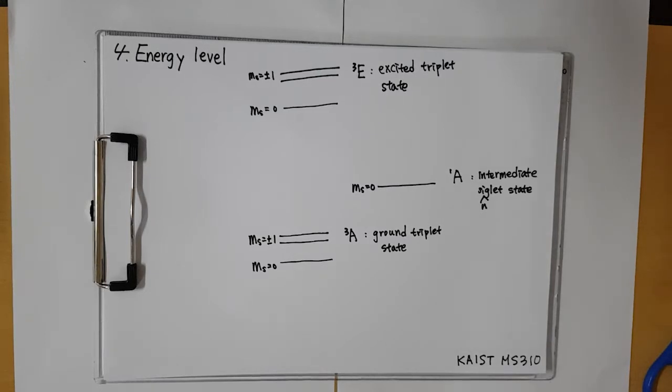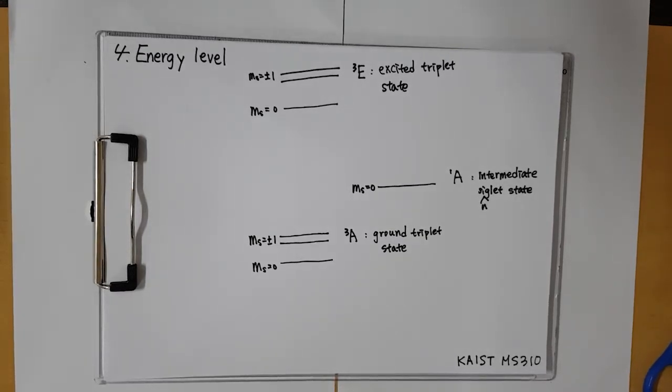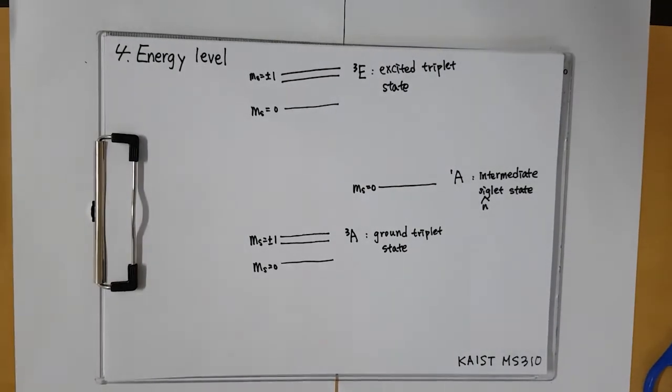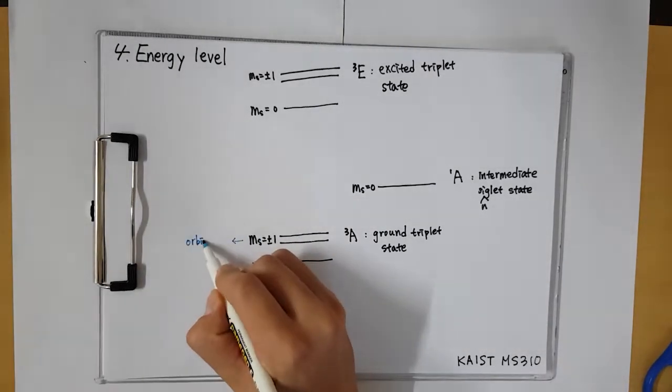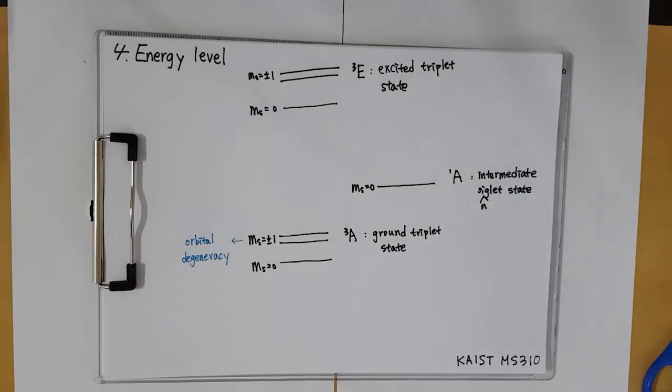Second, also, the state of ms equal plus minus one is more energy level than the rest of the state with anti-pair ms equal zero, because the two spins are paired. Third, we can also see here that the energy of ms equal plus minus one are the same, because of the orbital degeneracy.